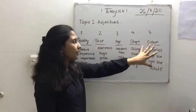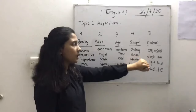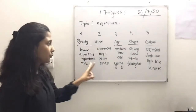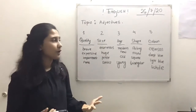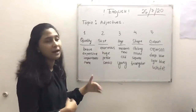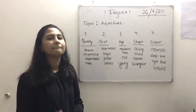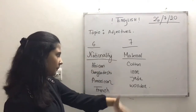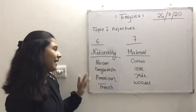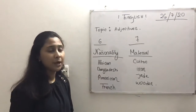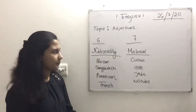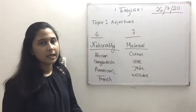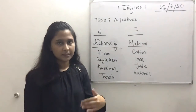Number five is color — it can be crimson, dark blue, light blue, white, pink, or anything. There are two more in this order that couldn't fit on the board, so I'll write them now. Number six is nationality — African, Bangladeshi, American, French, or anything. Number seven is material — cotton, iron, jade, or wooden.